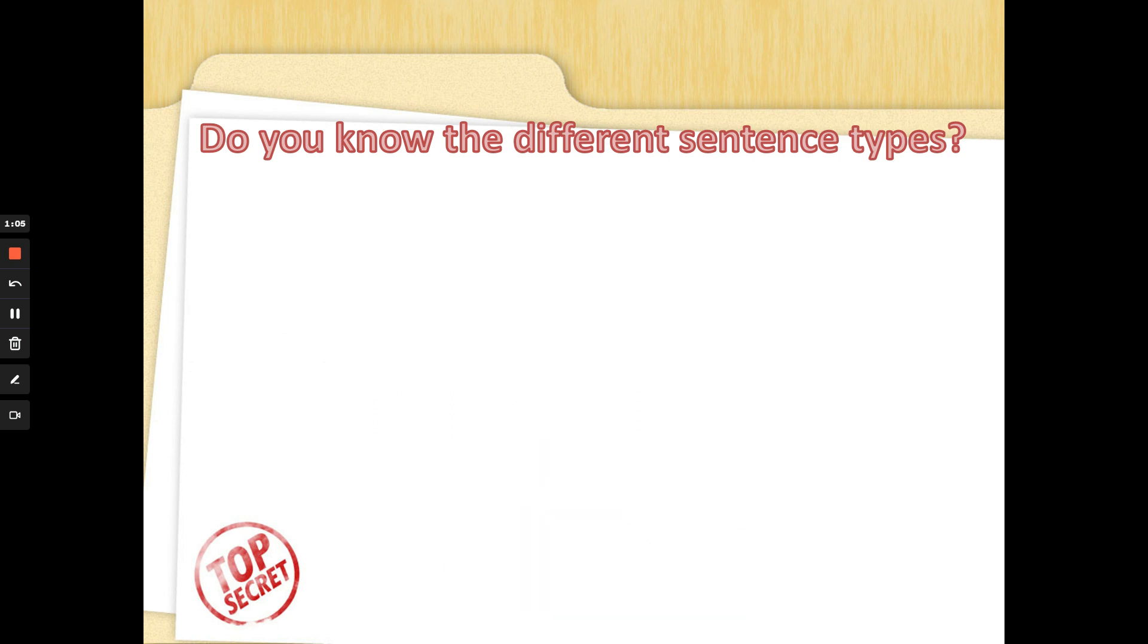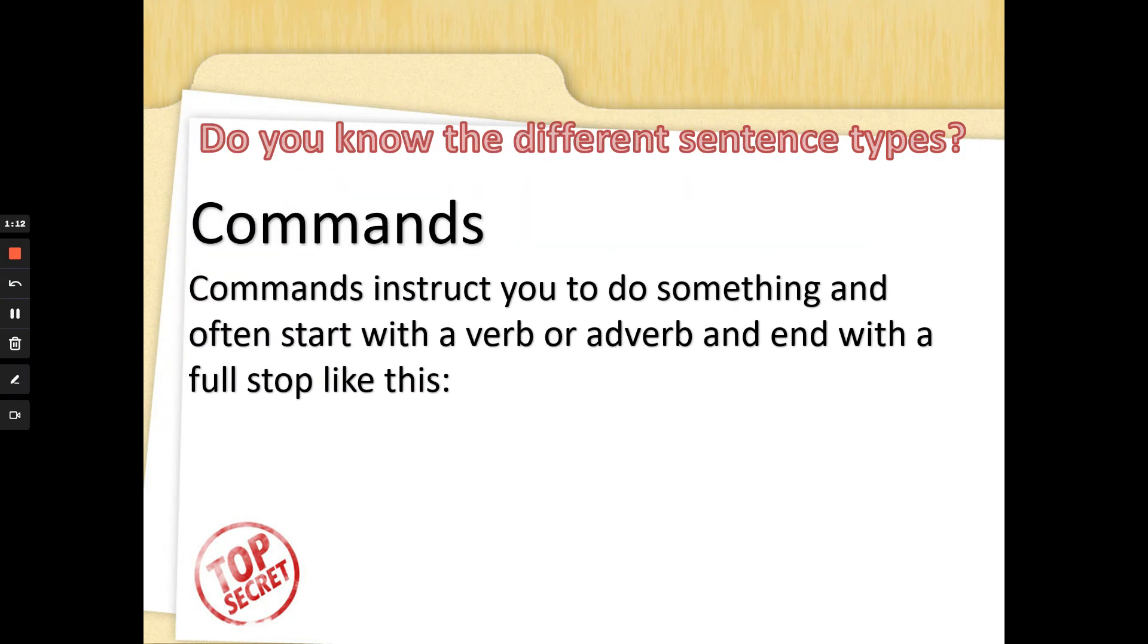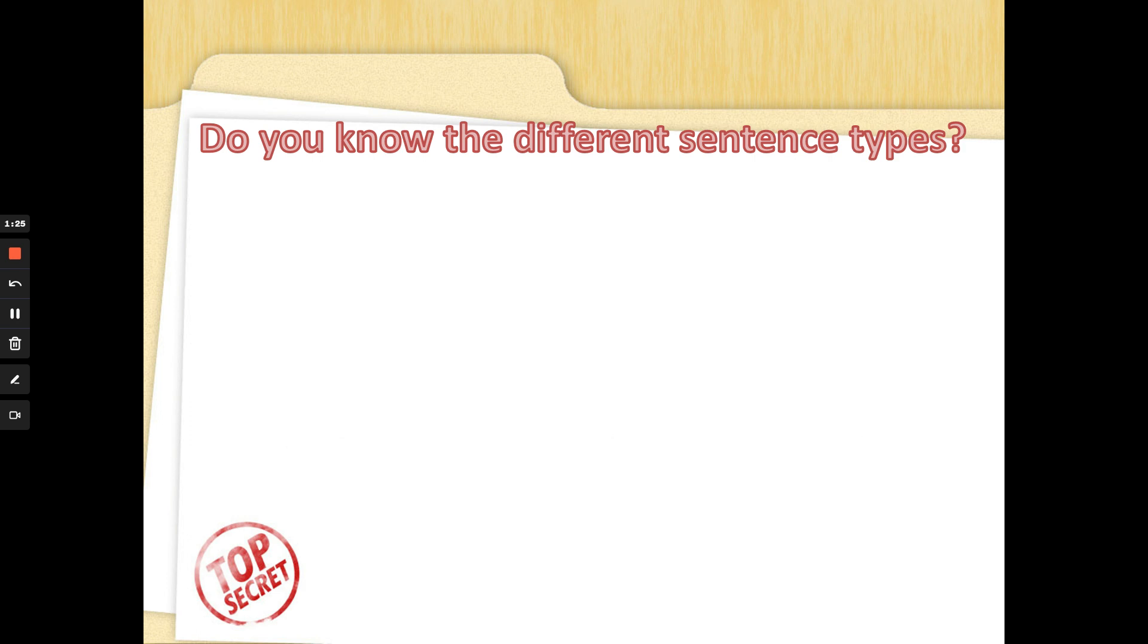Now the next sentence type is one that we've done lots of work on before Easter. A command sentence. A command instructs you or tells you to do something and often starts with a verb, a doing word or an adverb and ends with a full stop like this. Put the rubbish in the bin. Fantastic.